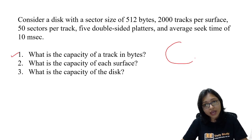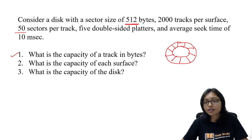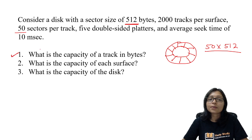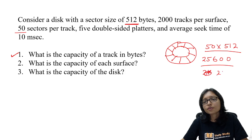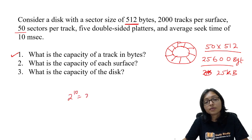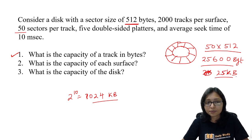Capacity of the track: in one track, it is a collection of sectors. The sector size is 512 bytes, and there are 50 sectors. So we multiply 50 by 512, which gives 25,600 bytes. This is the capacity of the track. We can say it is approximately 25 KB, because 2 to the power 10 (1024) is 1 KB.